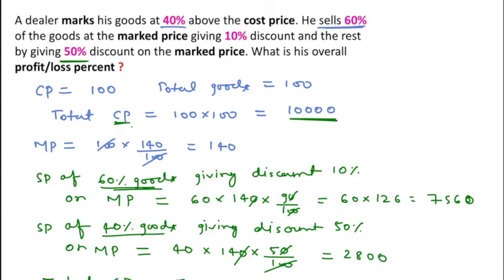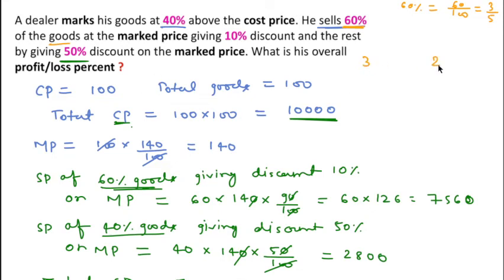In the second method, we can easily find the answer. 60% in fraction is 60 over 100, that is 3 over 5. This means if we consider 5 goods, then out of 5 goods, 3 goods are sold with the first condition and 2 goods with the second condition.